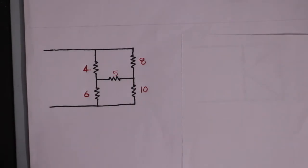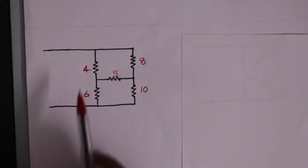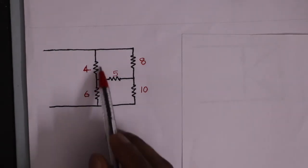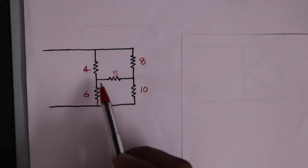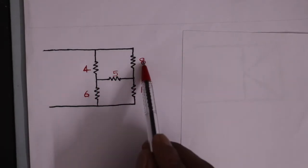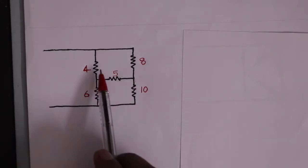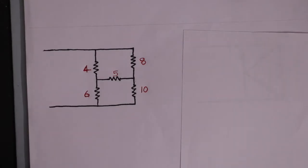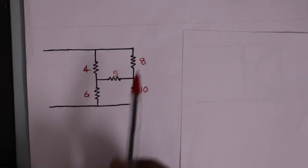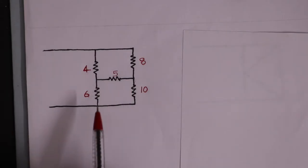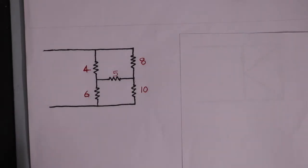We have 2 star connections: one with 4, 5, 6 ohms — this is a neutral point — and another with 8, 5, 10 ohms. This is also a neutral point. We have 2 stars. Now we have to get a star-delta conversion, and the star will be converted.